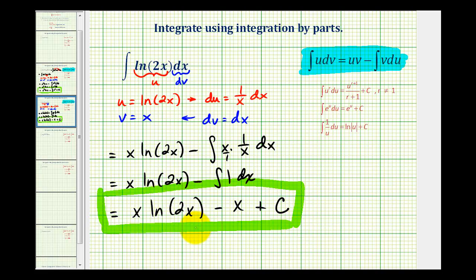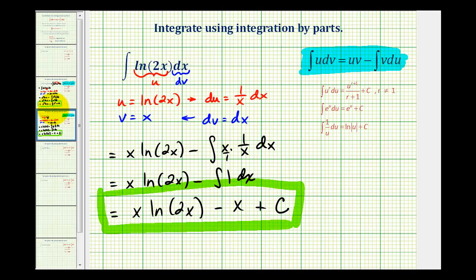From this example we can see exactly why, when using integration by parts and the natural log function is involved, we don't want to let dv equal the natural log function because look how difficult it is to integrate. We'll take a look at another example in the next video. I hope this was helpful.